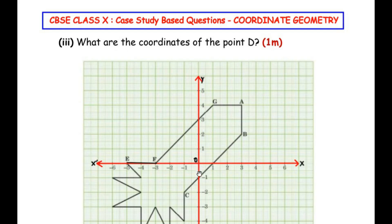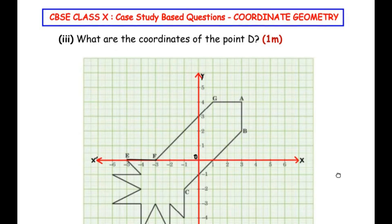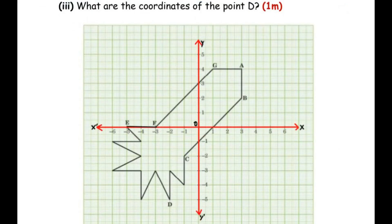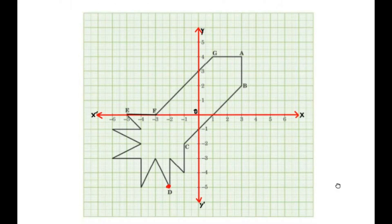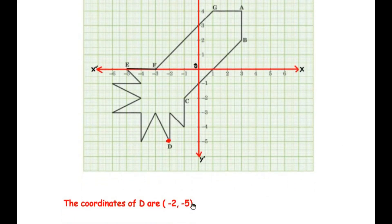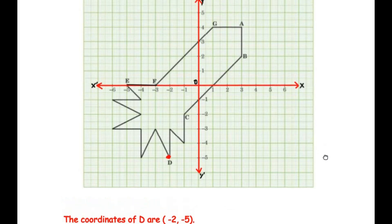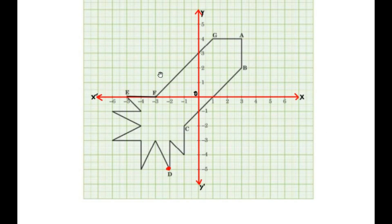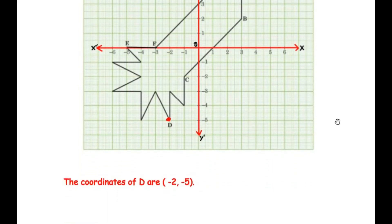What are the coordinates of point D? We simply look at where point D is on the graph and find its coordinates. The x-coordinate is at negative 2 and the y-coordinate is at negative 5. So the coordinates of point D are (−2, −5). I hope you have understood all the steps and liked the video. If you found this video useful, click on the playlists for more questions of this kind. Like, share, and subscribe to my channel. Thank you for watching.